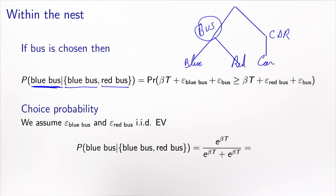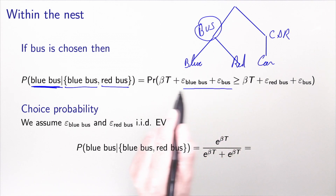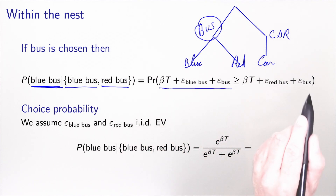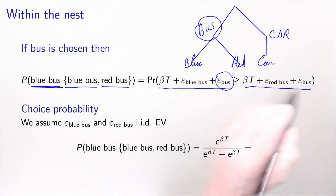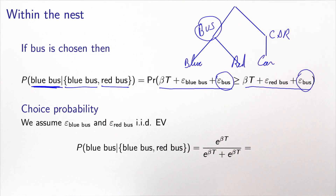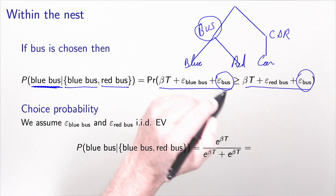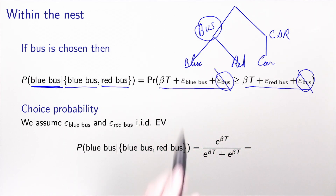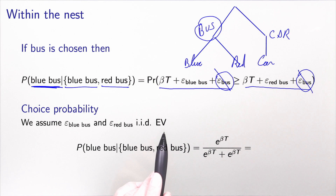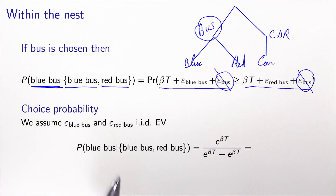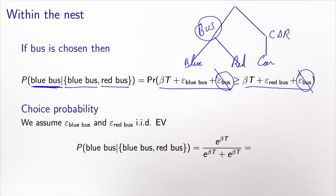From random utility theory, this is the probability that the utility of blue bus is greater or equal to that of red bus. But epsilon_bus appears identically on both sides, so it cancels out. We can then assume that epsilon_blue_bus and epsilon_red_bus are i.i.d. extreme value, since the shared unobserved attributes are all captured in epsilon_bus, which has been removed. Therefore, we can write a logit model.